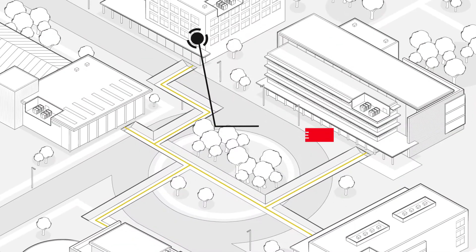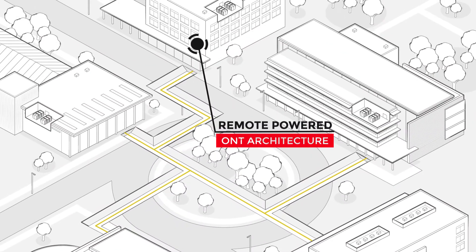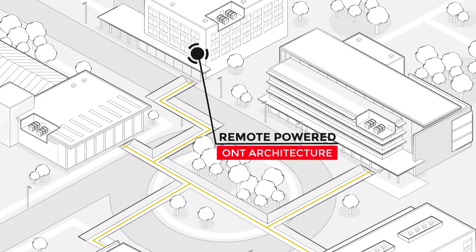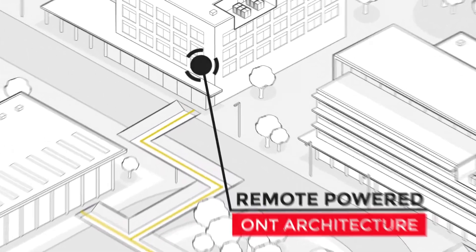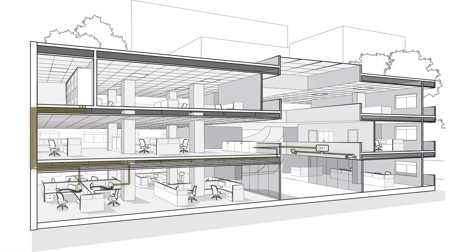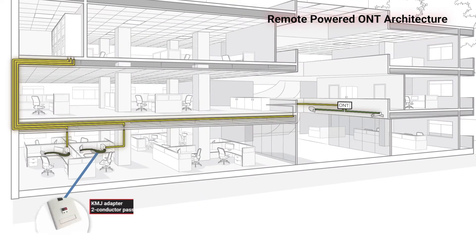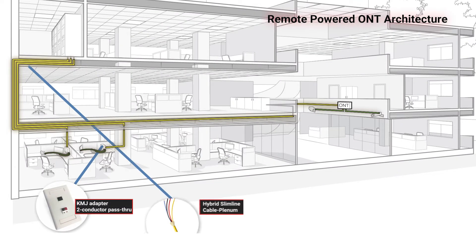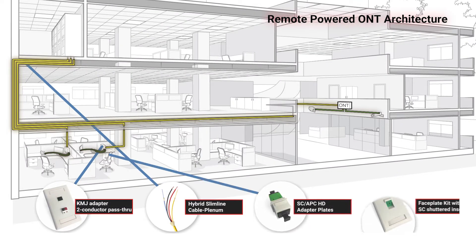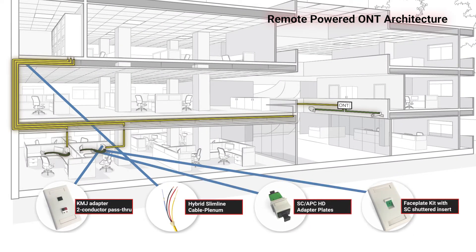The remote power architecture supplies power to the ONTs from a centralized power source using a hybrid cable. This is in contrast to local power, where the ONTs are powered from a wall outlet near the ONT. One key advantage to remote powering ONTs is that there are fewer power supplies that require battery or generator backup.